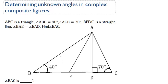We're given that angle BAE is equal to angle EAD, so we know that these angles are equal to each other. Since we don't know what these are called, we're going to label them as Y. Because they're equal, we're going to call them Y. What we need to find is angle EAC — this is the angle we ultimately need to find.